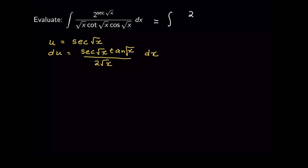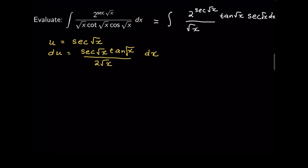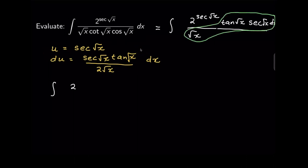Rewriting the integrand: we still have 2 raised to secant of square root of x, and square root of x. Then 1 over cotangent of square root of x is tangent of square root of x, and 1 over cosine of square root of x is secant of square root of x, with dx remaining. So when we substitute using u, the expression 2 raised to secant of square root of x becomes 2 to the u. The remaining piece — tangent of square root of x, secant of square root of x, dx over square root of x — that is 2 du.